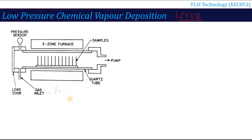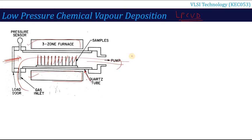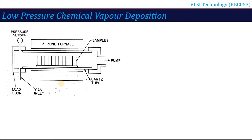This is the arrangement for low pressure CVD. There is a load door where wafers are loaded onto a boat, also called a substrate holder, where wafers are placed vertically. There is a 3-zone furnace and a quartz tube which operates at a particular temperature. On the secondary side, gas is exhausted to a pump and pressure is maintained by a pressure sensor.